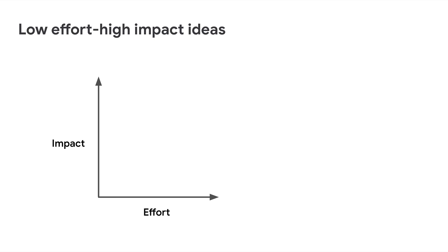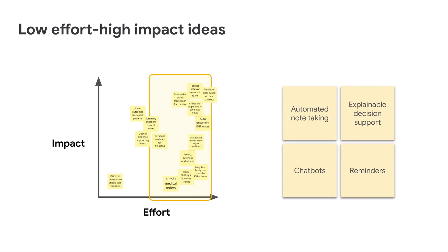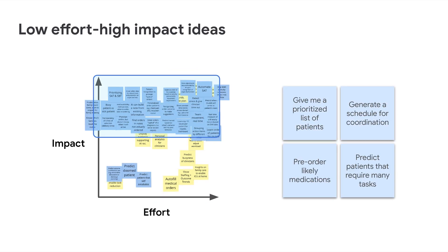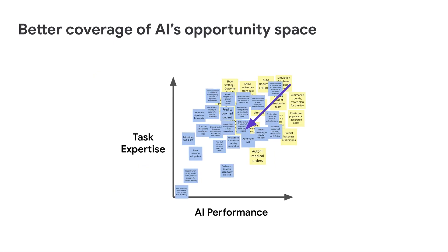We assessed the ideas using an impact-effort matrix. The ideas from the first workshop were mostly difficult to build and only about half were valuable. The second workshop led to low-effort, high-impact ideas — clinicians were able to take an example and transfer it to their own context. For example, predicting if a patient is busy to help assign nurses, or predicting and pre-ordering medications from the pharmacy based on patient trends. We also moved away from ideas requiring high AI performance toward ideas where moderate AI performance could be valuable, which led to better coverage of the AI design space.